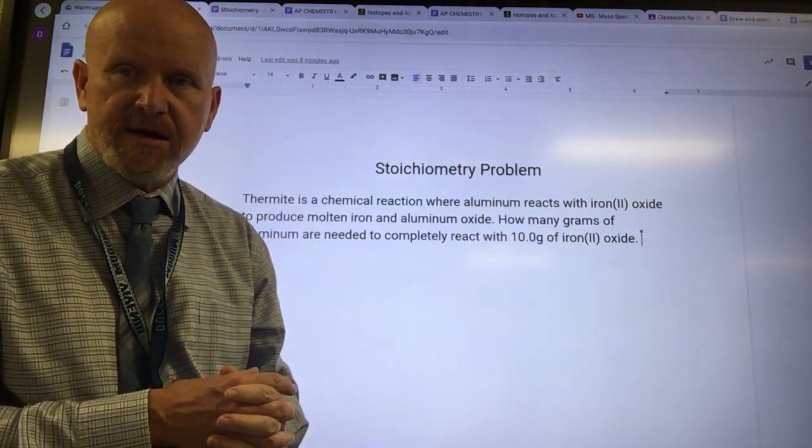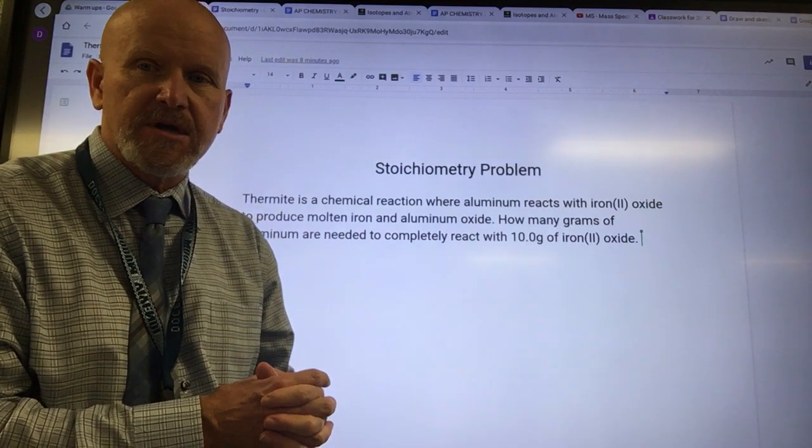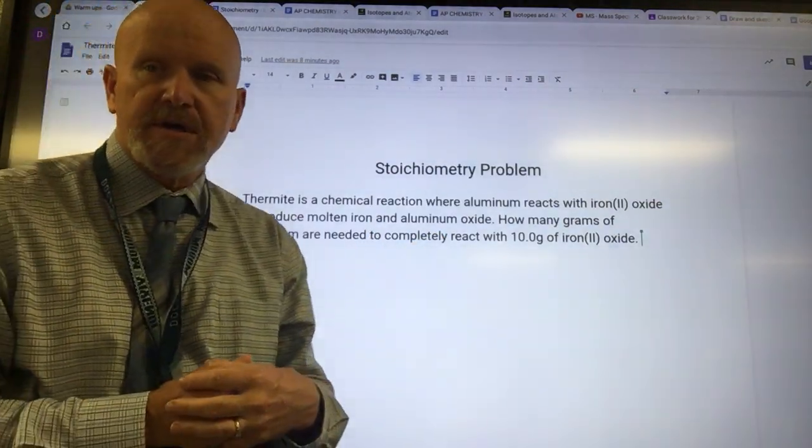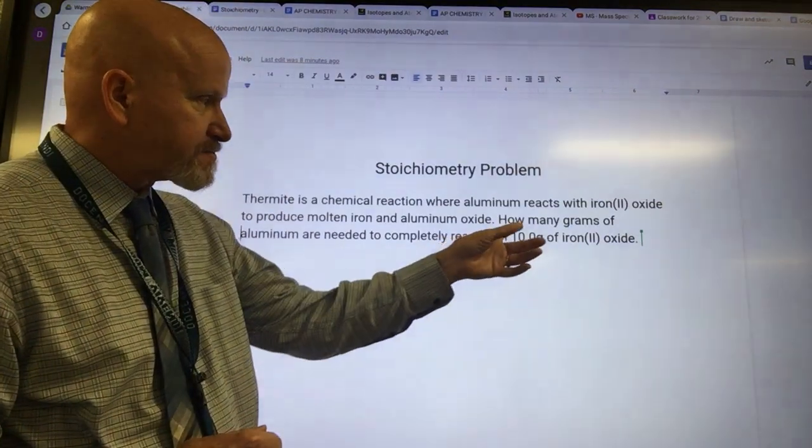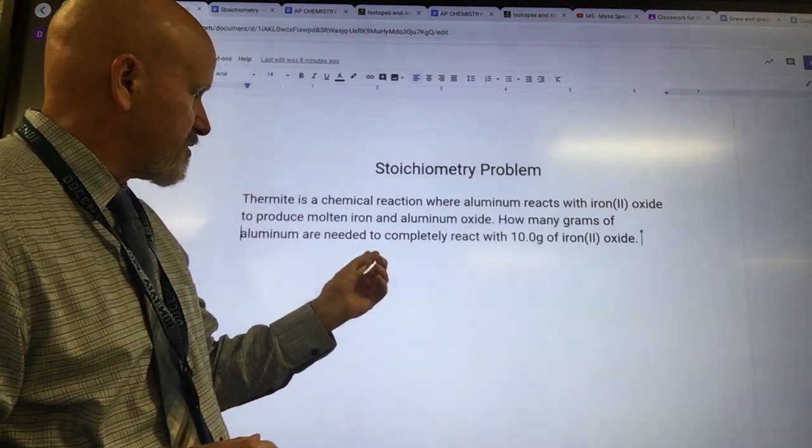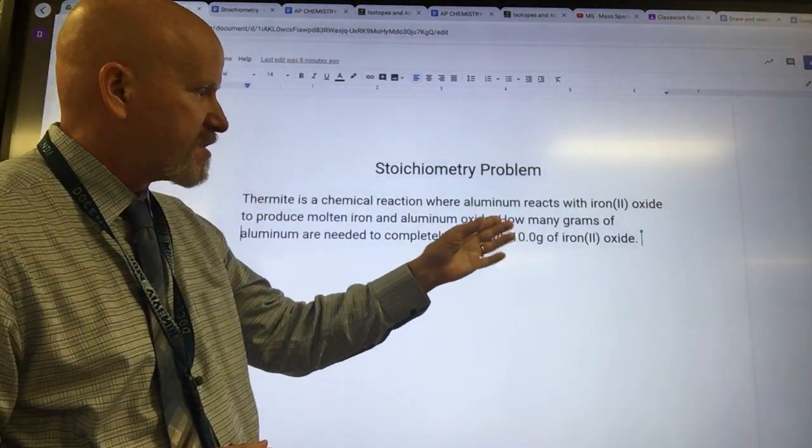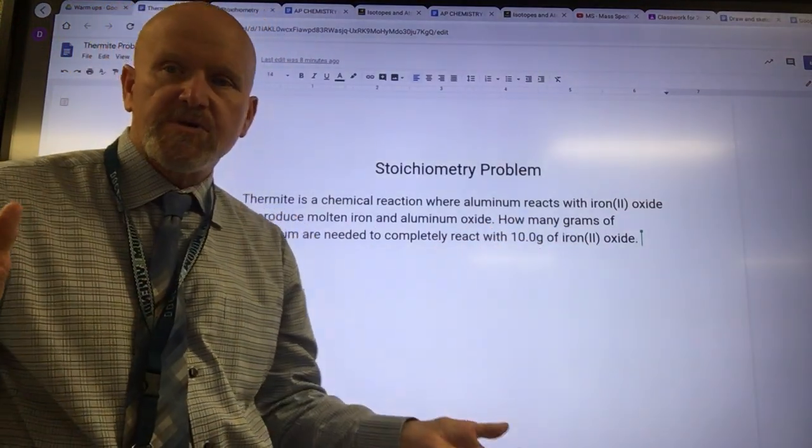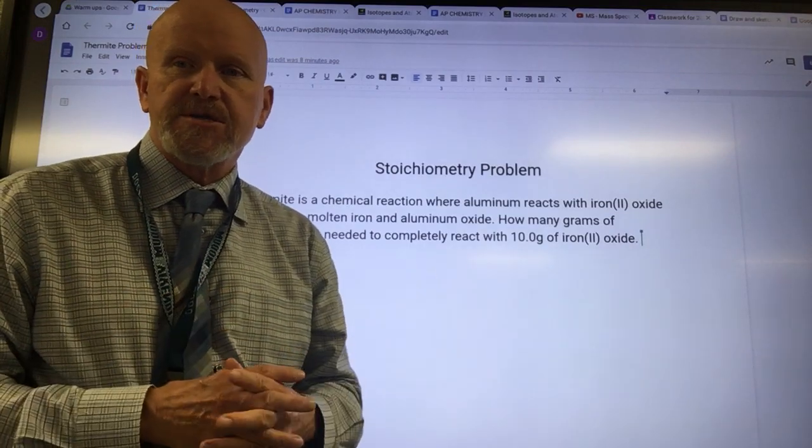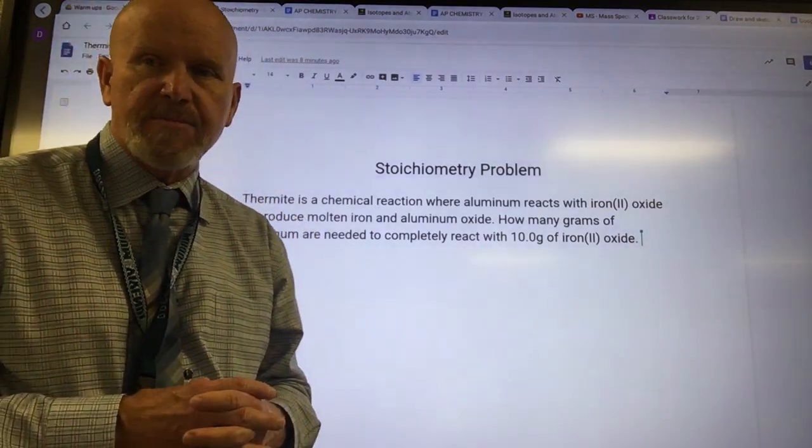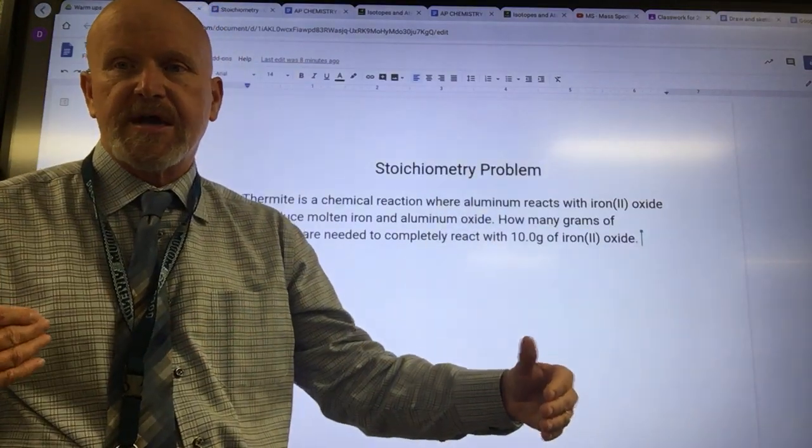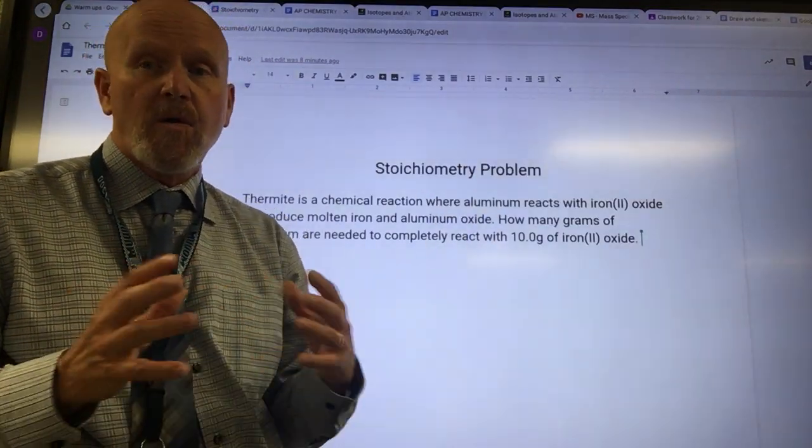The iron that's produced is molten and then you could kind of weld together pieces of broken rail, like say you're up in Alaska or Canada someplace where you couldn't really haul the welding equipment out there. It has some practical application. Anyway, how many grams of aluminum are needed to completely react with 10 grams of iron(II) oxide?